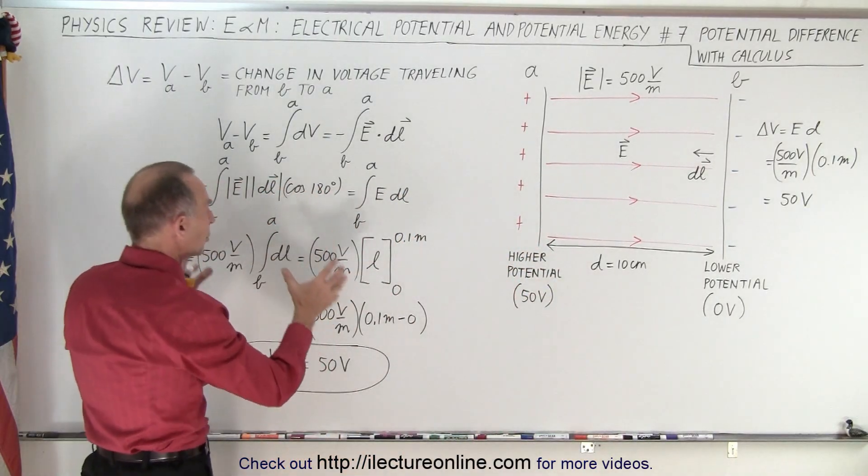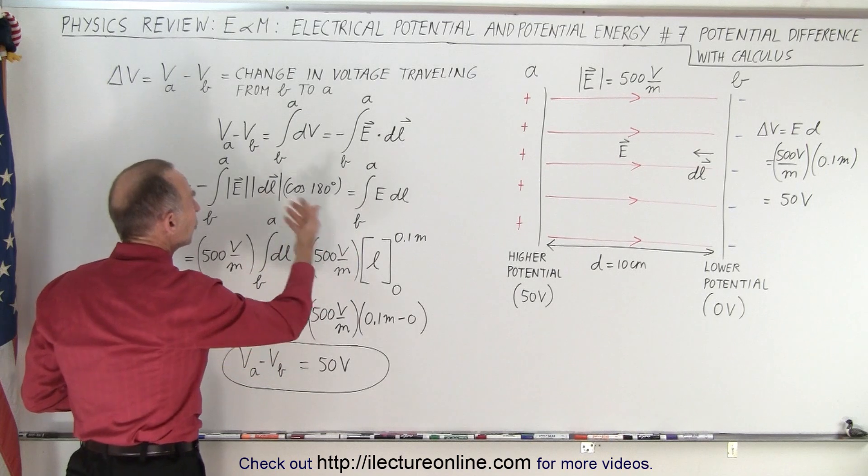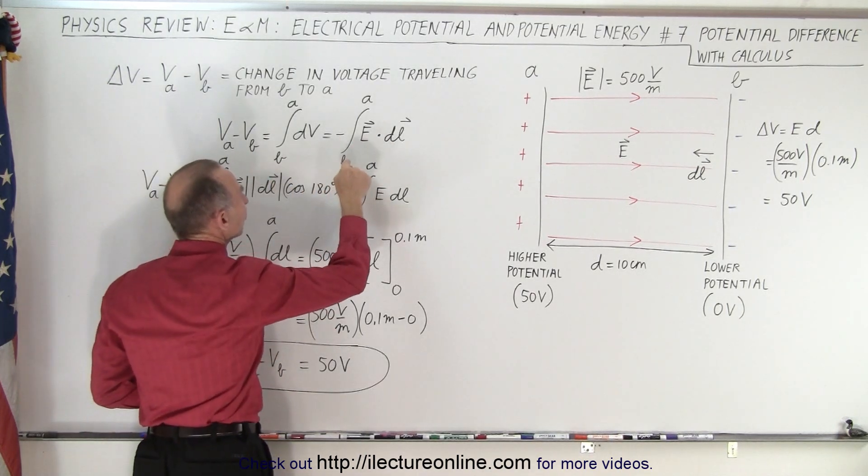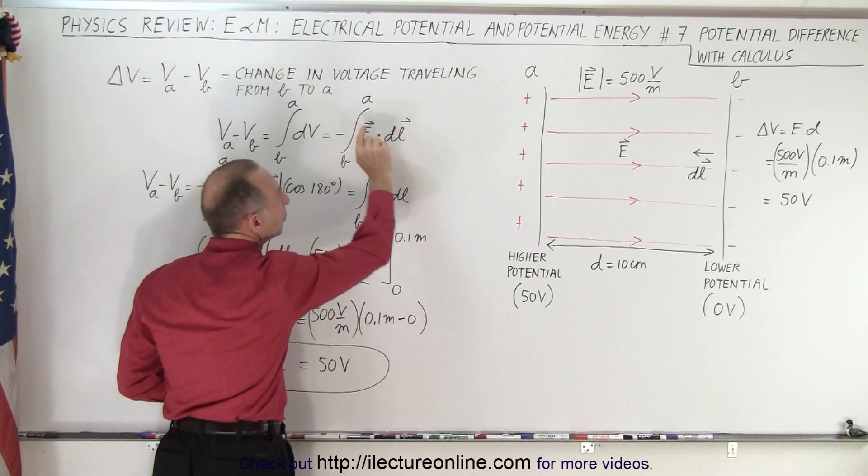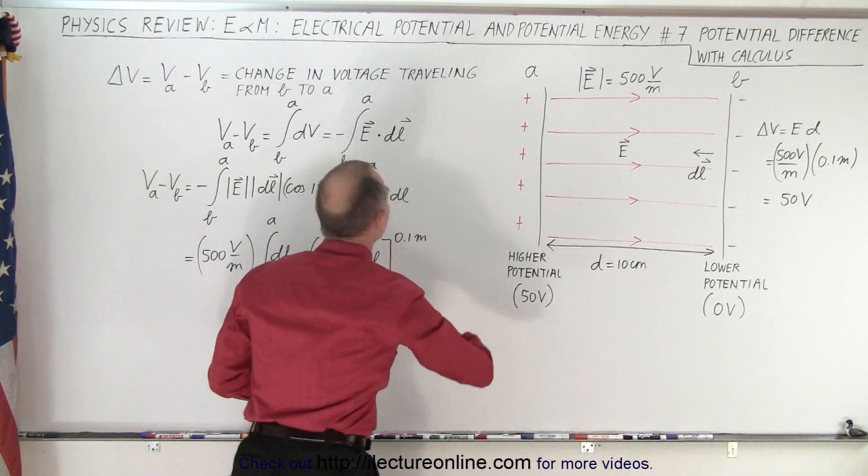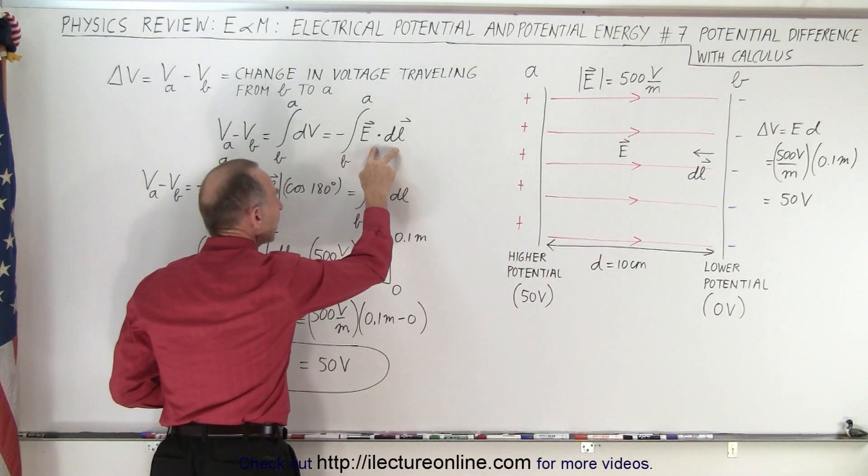So it's very important that when you use calculus, and you use the equation where the difference in potential is equal to the integral going from the end point to the beginning point, right, I want to know the difference traveling from B to A. It's E dot DL.